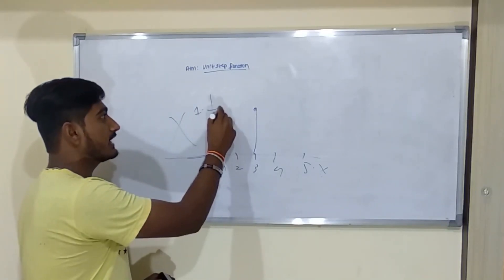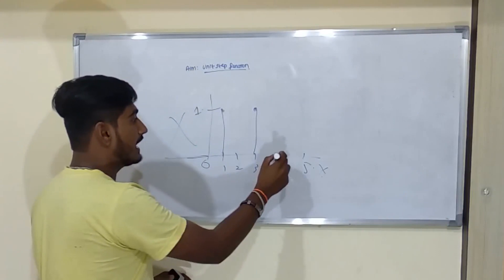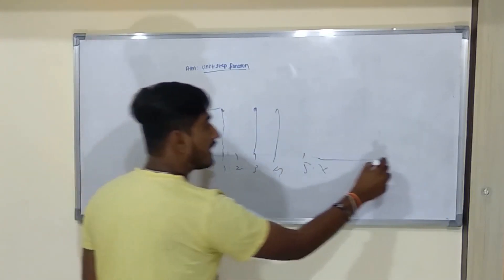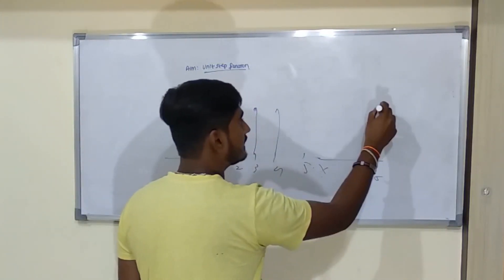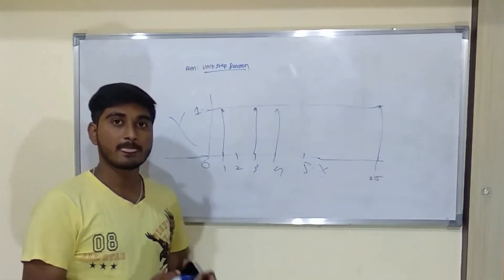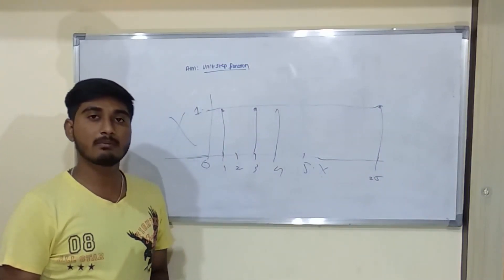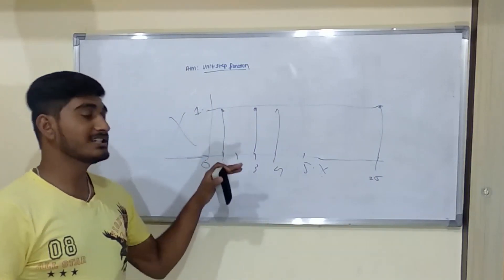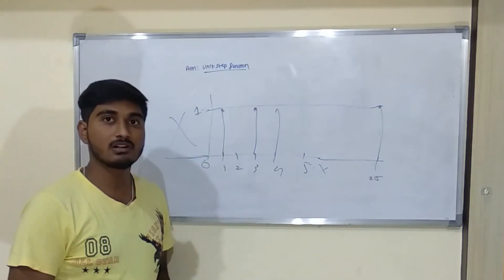It can have different heights or it can be discrete like this, and if you take 25, here it can place that unit step function. So after this tutorial, you will be able to visualize this unit step function in MATLAB. So let's get started.